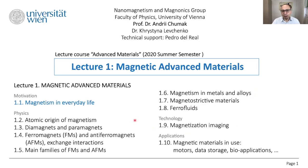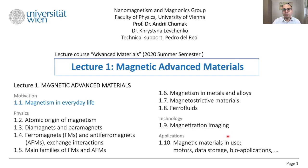In the technology part we will discuss different types of magnetization imaging techniques. Magnetization is the total magnetic moment of a body normalized per volume — it's one of the main properties of a magnetic material — and here we will discuss how you can measure it.